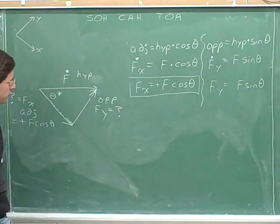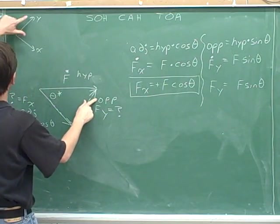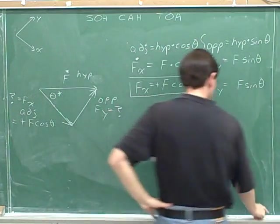According to the arrow that we figured out, f sub y is pointing up and to the right. And the positive y direction is up and to the right. So f sub y is positive.